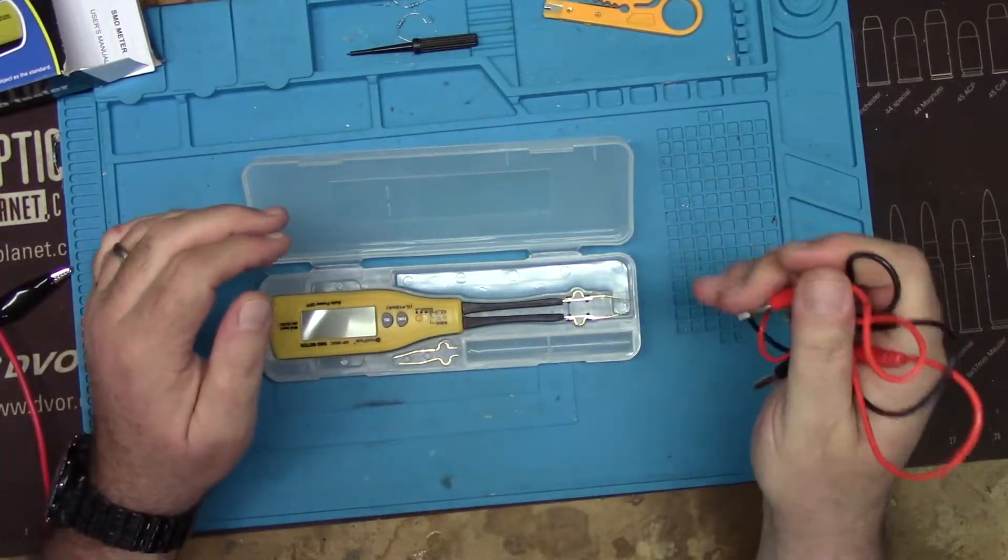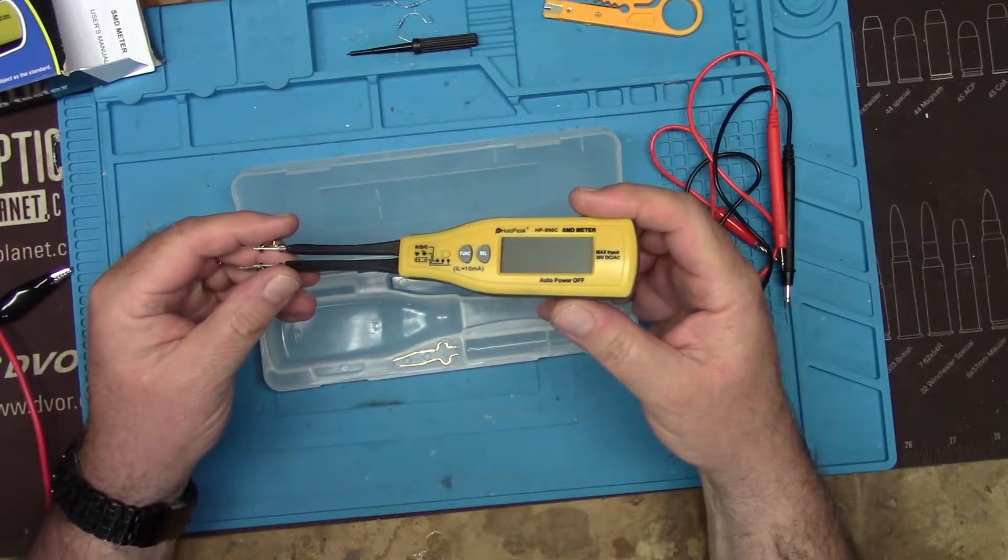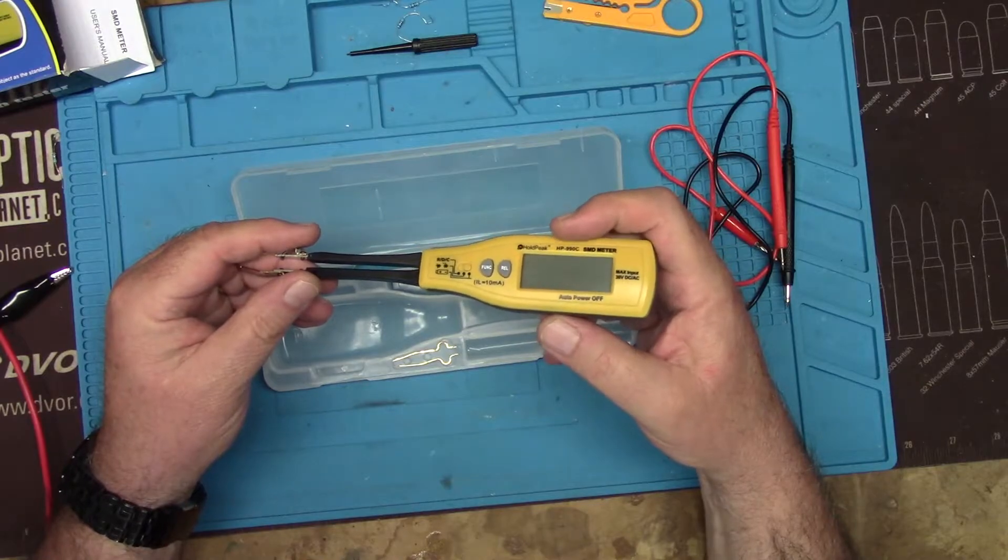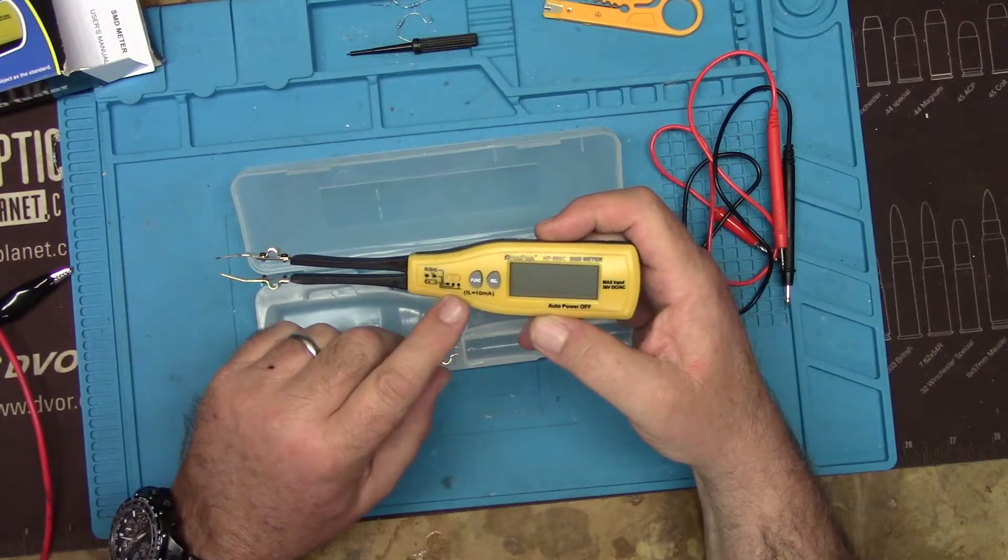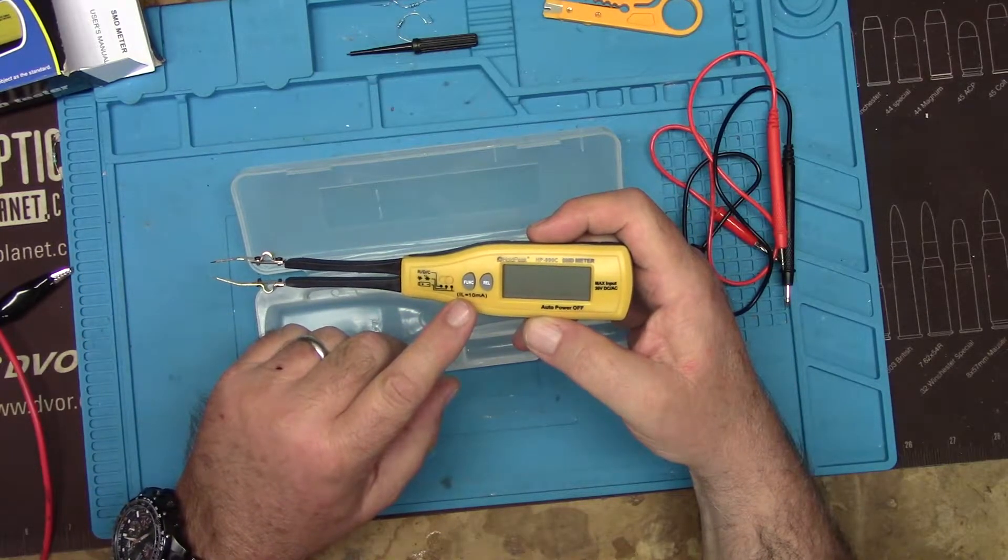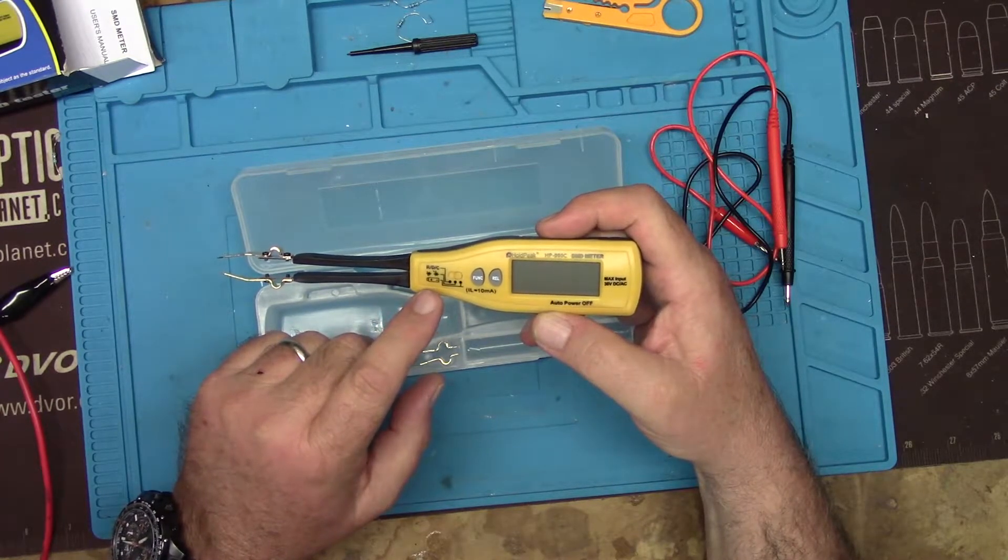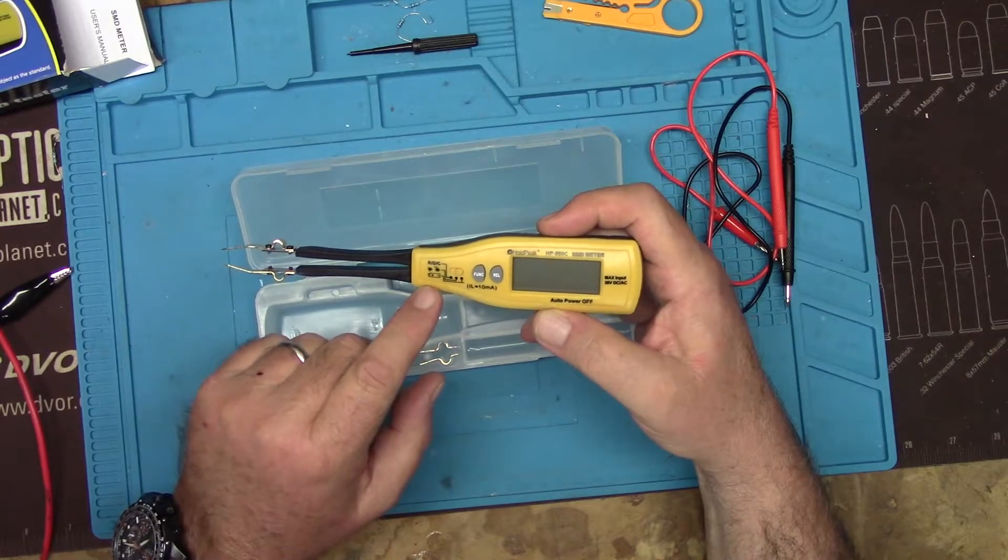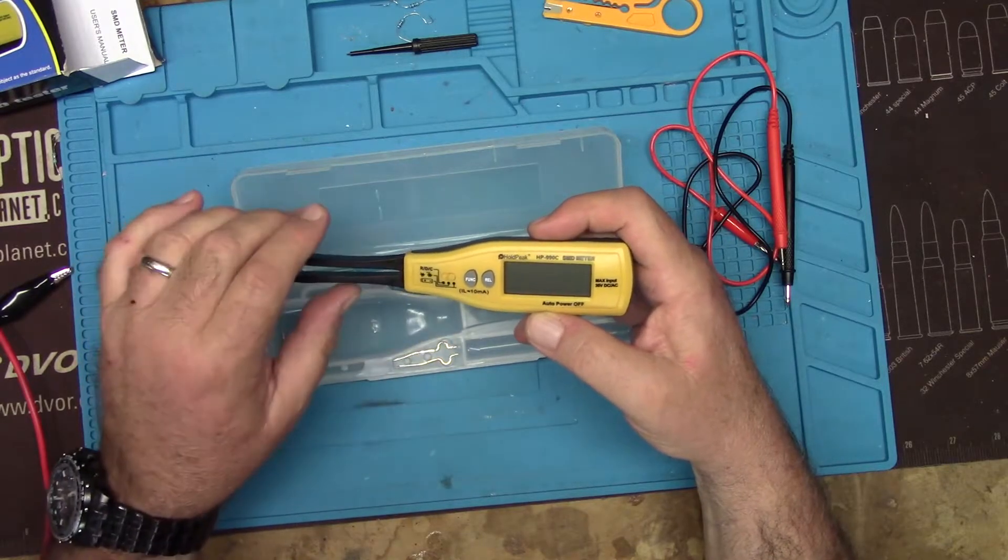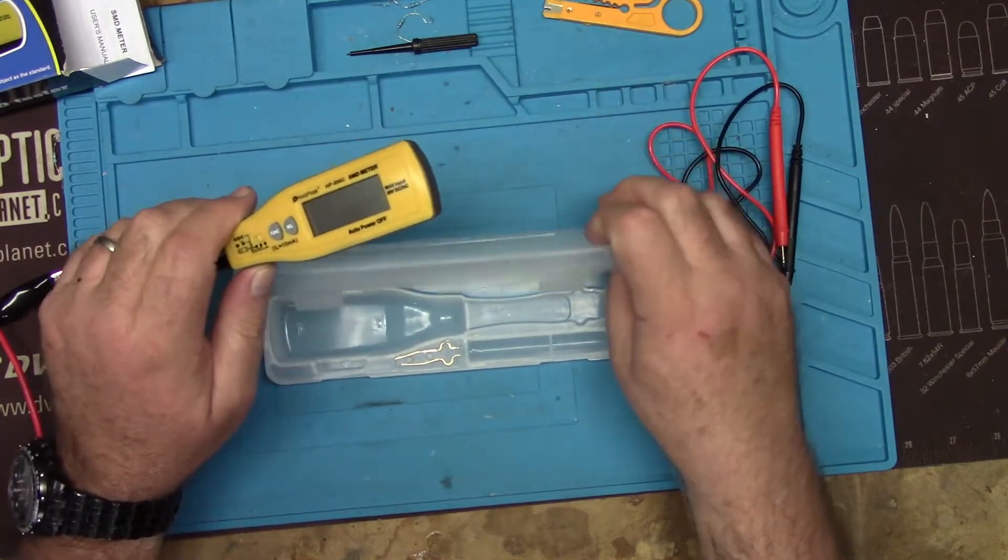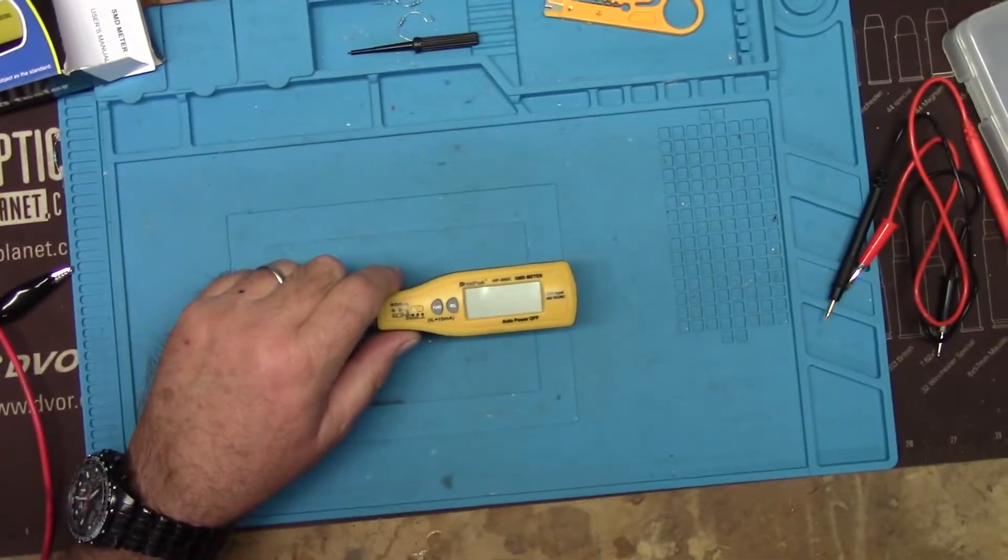This is the actual device itself, the HP-990C. It has auto power off and a function button to change between resistance, diode check, continuity, and capacitance. It has a mode that does Zener diode check and then a straight DC voltage check. I'm going to zoom us in so you guys can see this and we'll take a look at it.